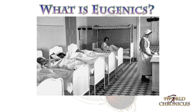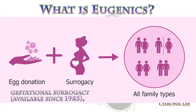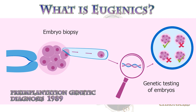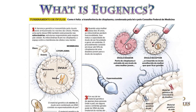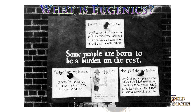Since that time, we've seen various technologies come into play in what we see as eugenics. Gestational surrogacy has been available since 1985, pre-implant genetic diagnosis has been available since 1989, and cytoplasmic transfer has been available since 1996. All of this adds to a greater temptation and ability to influence the genetics of the populace on a much broader scale.